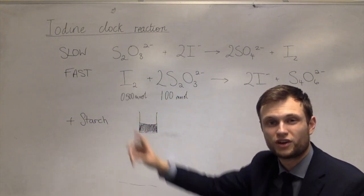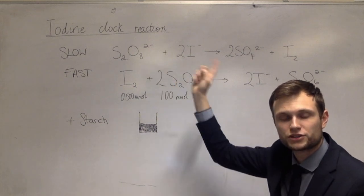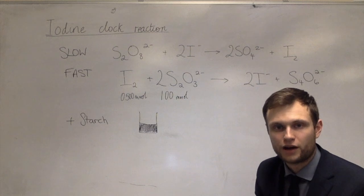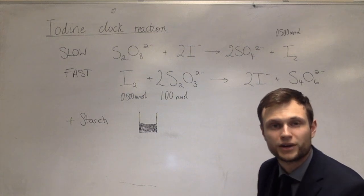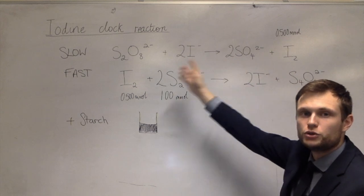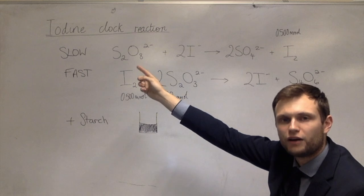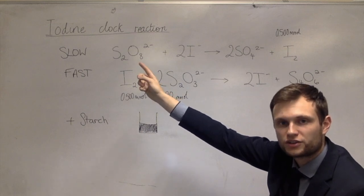And because iodine is only created in the first reaction, it tells us that the top reaction has created exactly half a millimole of iodine. And by extension, we've created one millimole of sulfate ions, we've used one millimole of iodide ions, and we've used half a millimole of peroxidised sulfate ions.